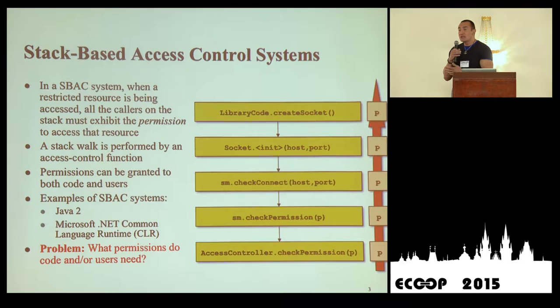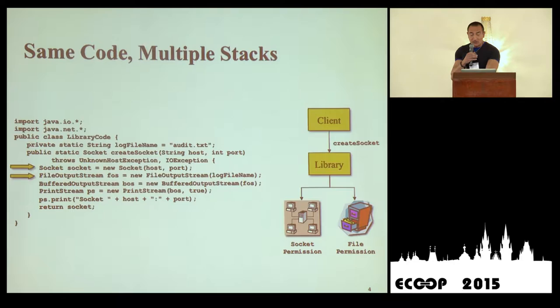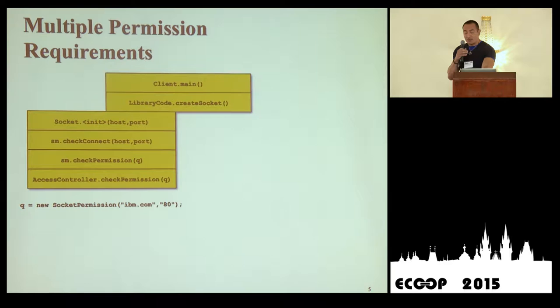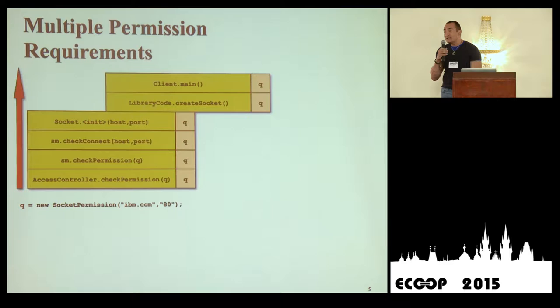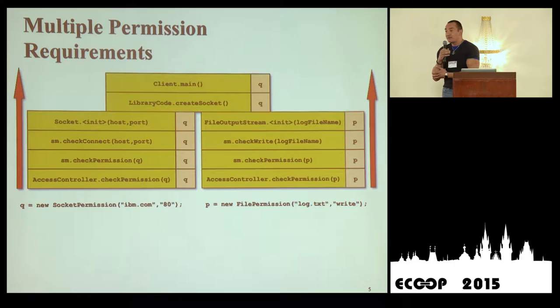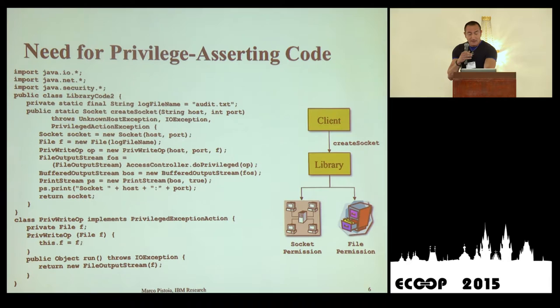The problem is to identify what permissions the code needs at runtime and what permissions the users will need at runtime. It's also possible for code to be on two stacks of execution. For example, we have a call to the socket constructor and a call to the file output stream constructor. On the first stack, the socket constructor is called — all callers on the stack will be demanded socket permission. We also have a caller to the file output stream constructor, another security-sensitive operation. So we have some code that needs permission Q, some that needs permission P, and some that needs both P and Q.